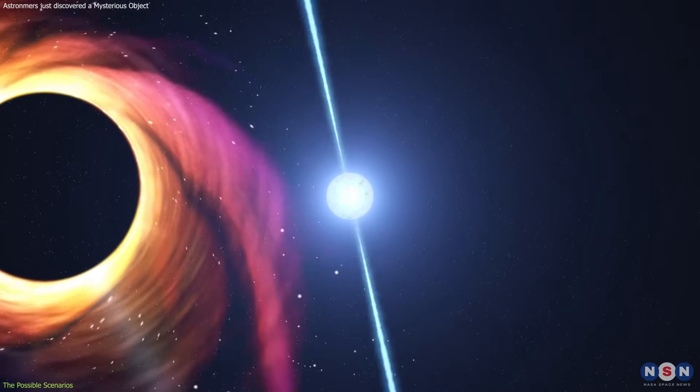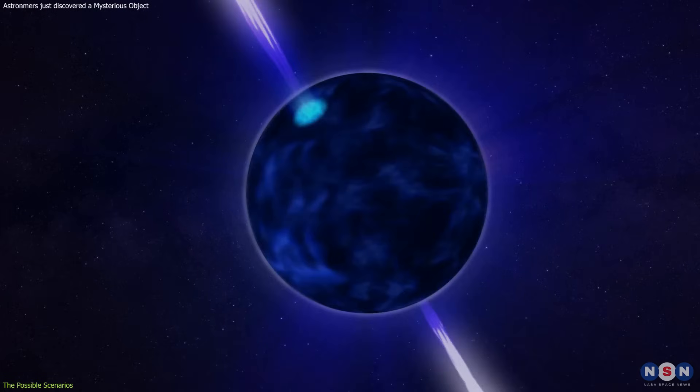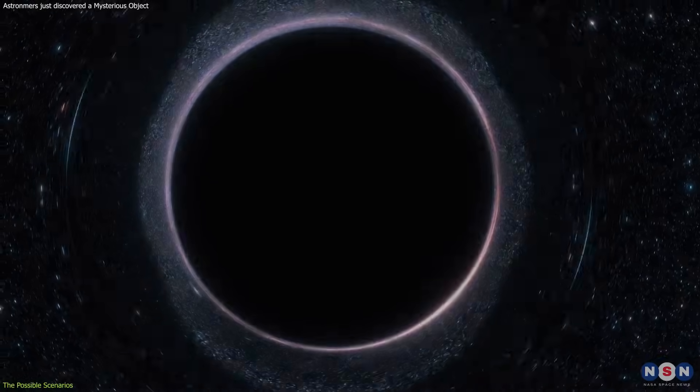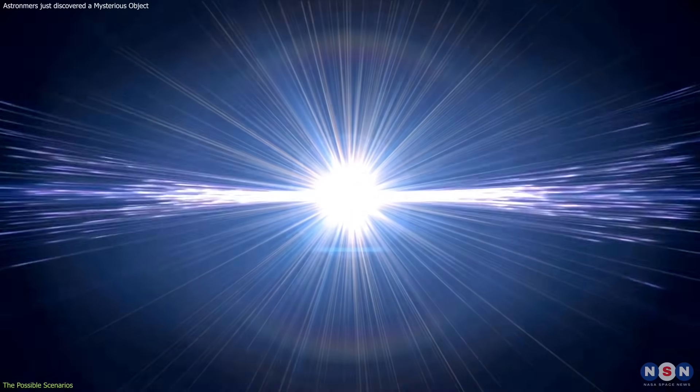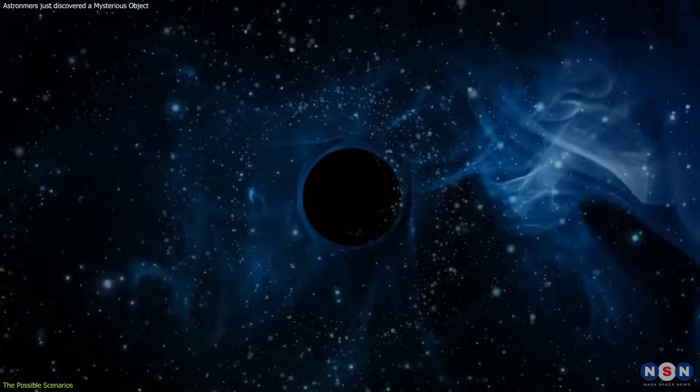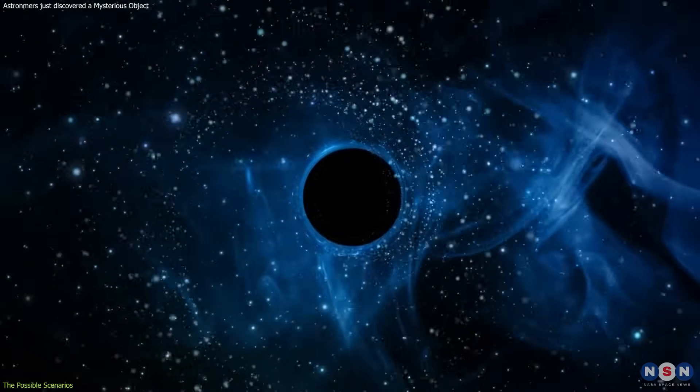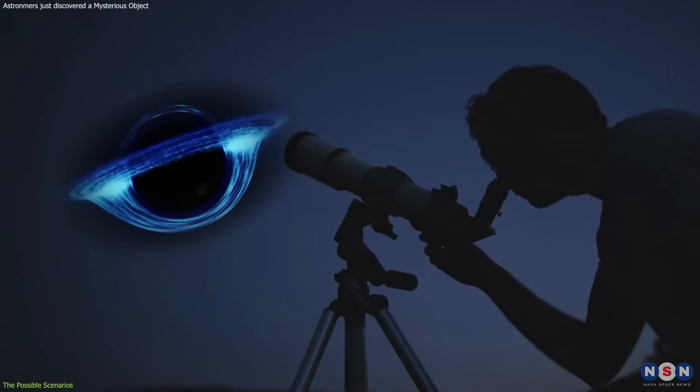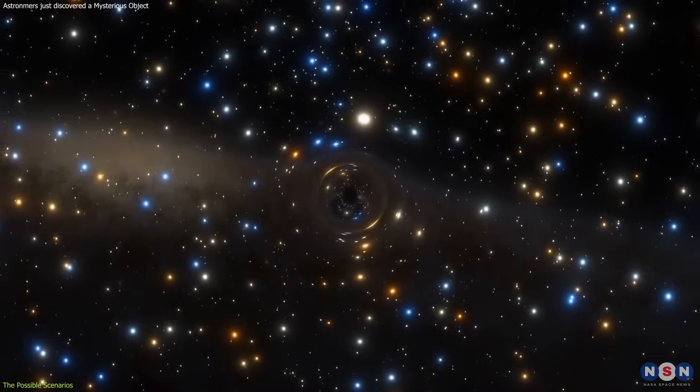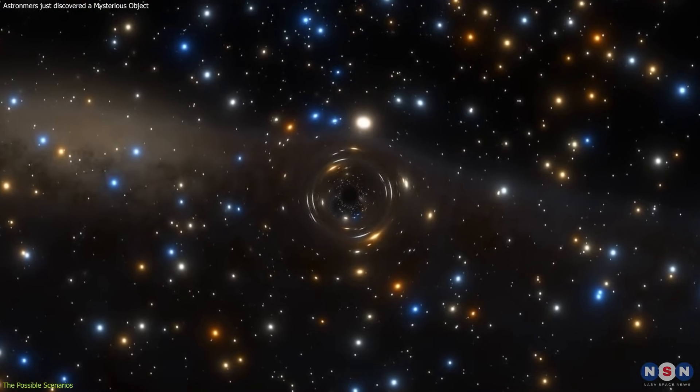The main difference between a neutron star and a black hole is the presence or absence of a surface. A neutron star has a surface, which means that it can reflect light and emit radiation. A black hole has no surface, which means that it can only absorb light and emit nothing.